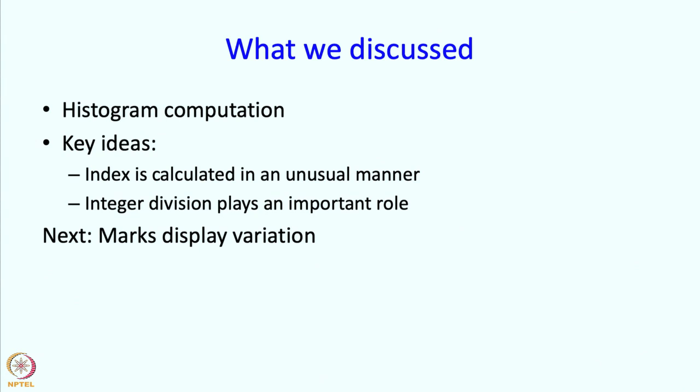Welcome back. In the last segment we talked about Histogram Computation, which showed how the index that decides which element we are accessing can be computed in a somewhat clever manner. Now we are going to take another variation on the marks display problem. In this variation, the roll numbers are not consecutive in the range 1 through 100 or 0 through 99.